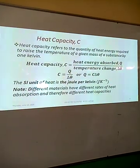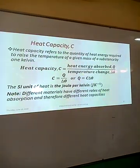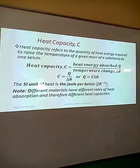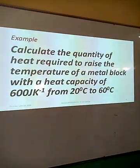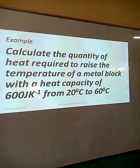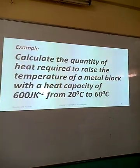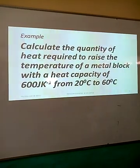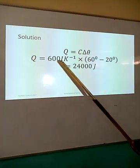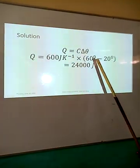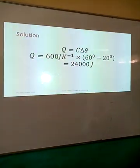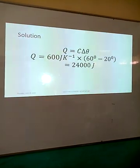Different substances have different rates of heat absorption, and therefore different heat capacities. For example, the amount of heat required to raise the temperature of water by one Kelvin is different from what is required for paraffin. Consider this example: calculate the quantity of heat required to raise the temperature of a metal block with a heat capacity of 600 Joules per Kelvin from 20 to 60 degrees. Using Q equals C delta theta, C is 600 J/K and delta theta is 60 minus 20 equals 40 K, giving Q equals 24,000 Joules.